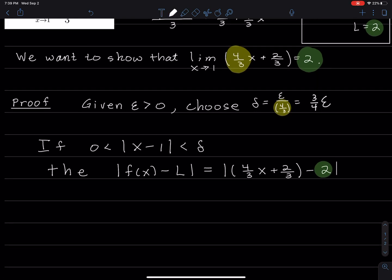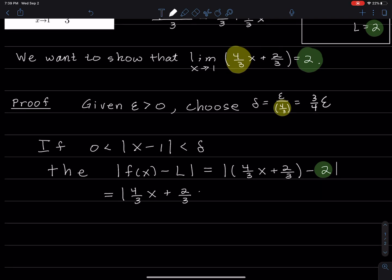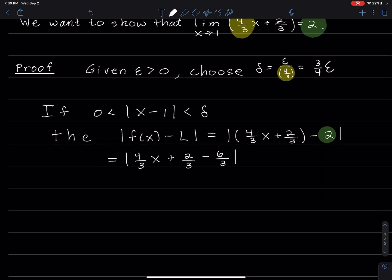Then the thing is what I want to do now is I want to combine these two constant terms here. 2/3 minus 2 is the same thing as 2/3 minus 6/3, because I'm getting a common denominator. So I have (4/3)x minus 4/3. Things are coming along. And then that's equal to, if I factor out 4/3, I get (4/3) times (x - 1).